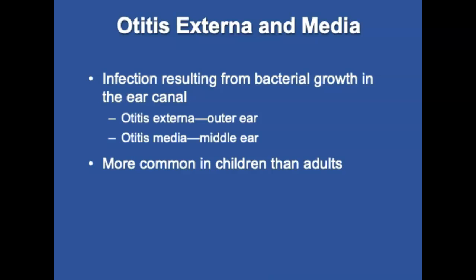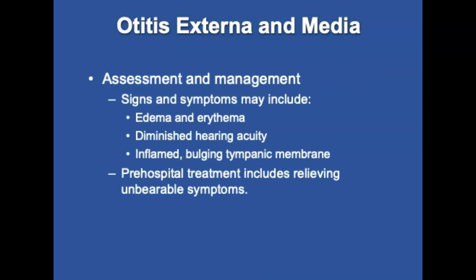Otitis externa and media are infections resulting in bacterial growth in the ear canal. Otitis externa is infection in the outer ear, and otitis media is infection in the middle ear. Both are more common in children than adults and are among the most common bacterial infections. Otitis externa may also be an allergic or fungal reaction, and otitis media can be virally induced. Signs and symptoms include pain, itching, diminished hearing, and an inflamed, bulging tympanic membrane on otoscope exam. Pre-hospital treatment should be directed at relieving unbearable symptoms; antibiotics may be administered in the hospital.